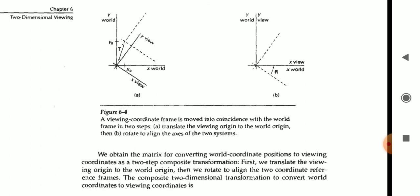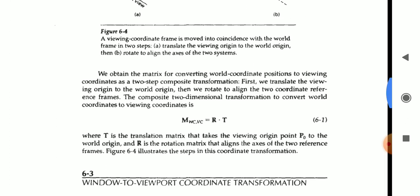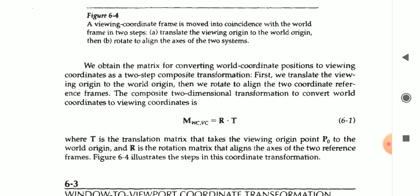That is translate the view origin to the world origin. And rotate to align the axis of the two systems. Now, this formula shows the result. The resultant object of model has been done rotation as well as translation. I hope you understand the viewing coordinate. How transformations are done?